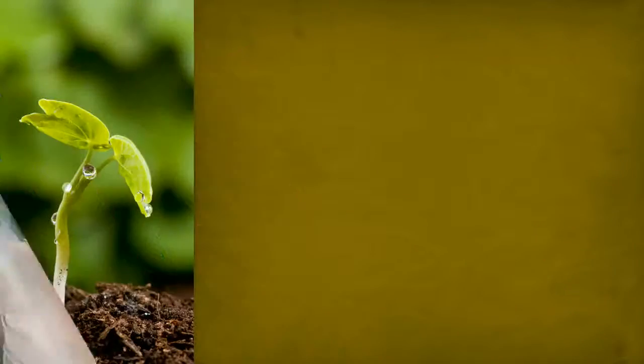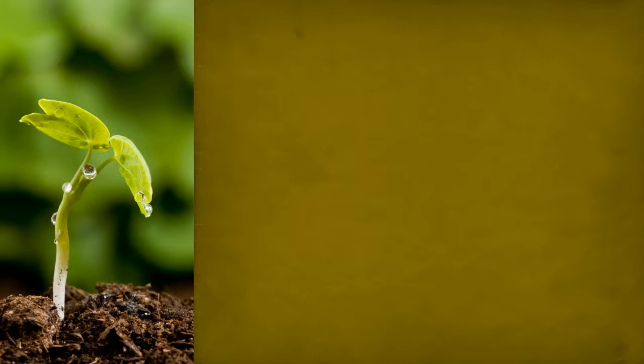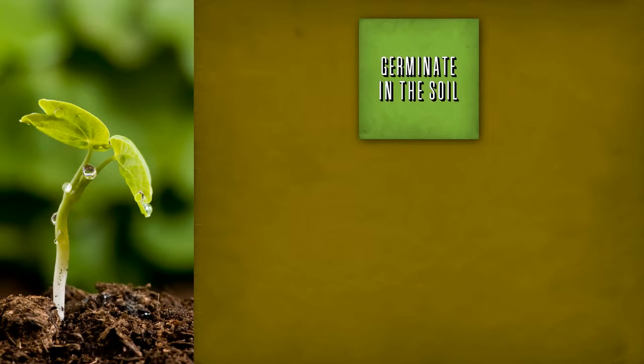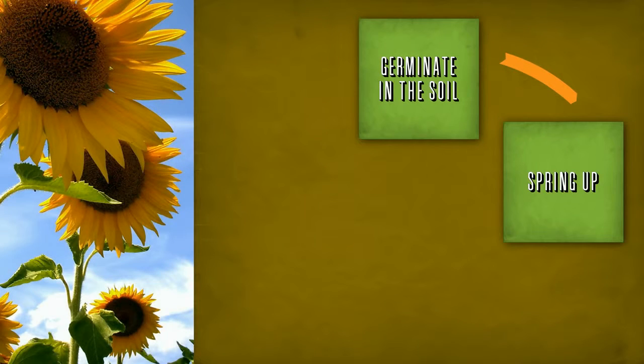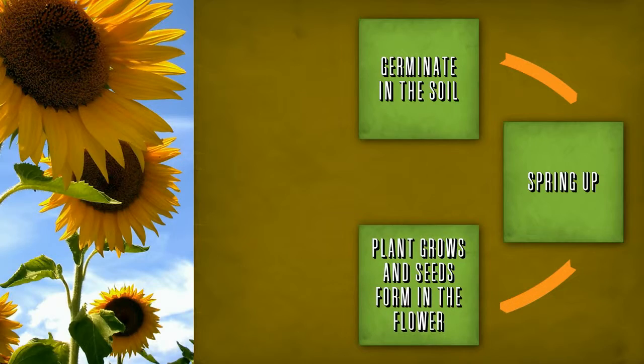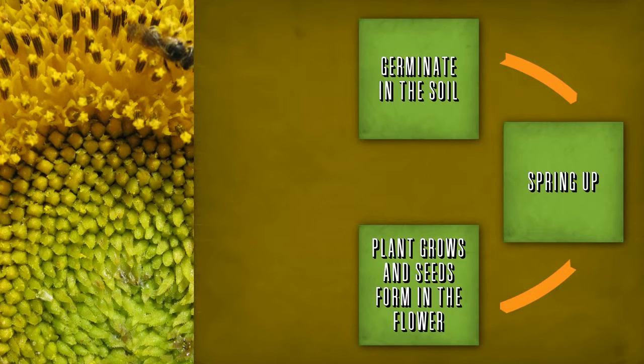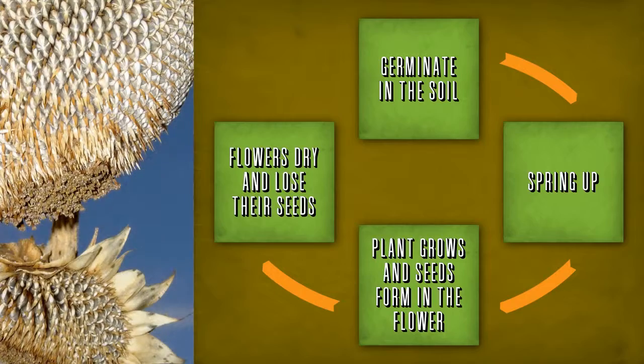Seems like birds and bird seed have a lot in common — both have life cycles. The sunflower seeds from last year's sunflowers germinate in the soil and spring up behind the school. As the plant grows, the seeds form in the flower throughout the summer. In the fall, the flowers dry and lose their seeds, and the cycle repeats next year. You'll build your empire one sunflower at a time. Come on, let's keep looking.